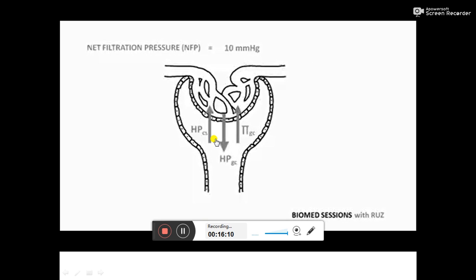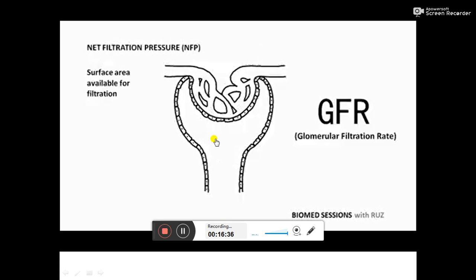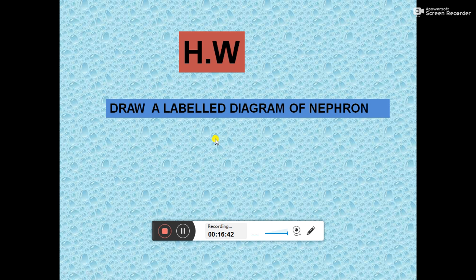There are many nephrons and hence many renal corpuscles in each kidney. Glomerular filtration rate (GFR) is the total amount of filtrate formed by all the renal corpuscles in both kidneys per minute, and it can be used to assess whether an individual has kidney impairment. GFR takes into account not only NFP but also the surface area available for filtration and the permeability of the glomeruli. Today's homework is a labelled diagram of a nephron.